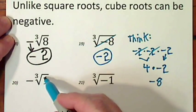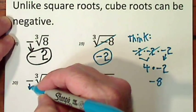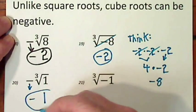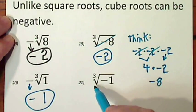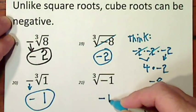Negative cube root of 1, the cube root of 1 is 1, and the negative symbol just comes down. The cube root of negative 1 is simply negative 1.